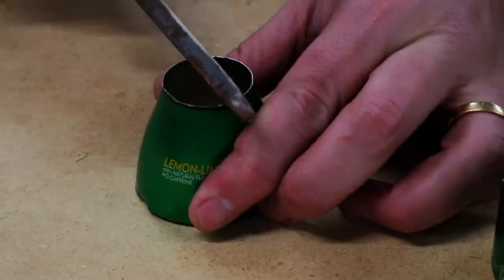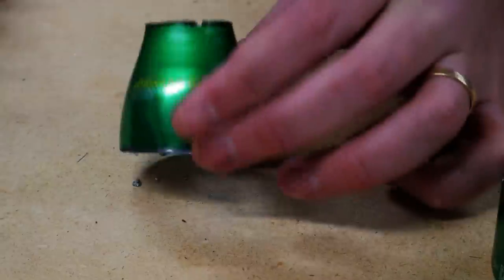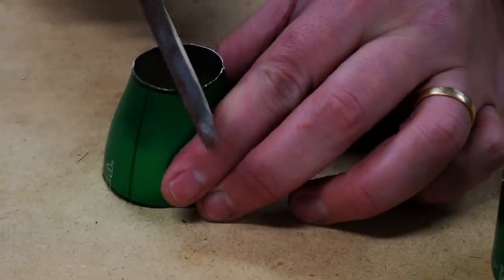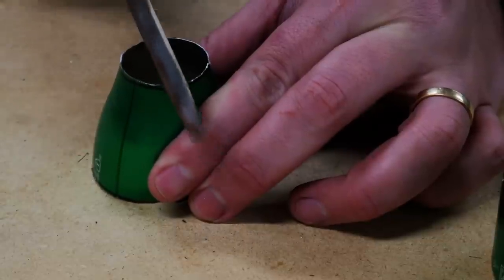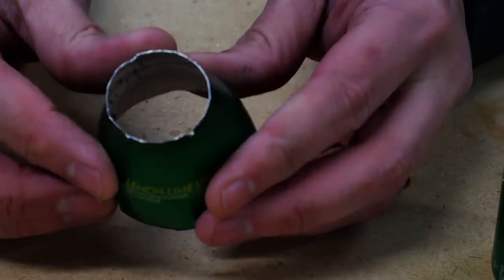Now here I've got a v-shaped file and you're just going to file in some notches here and that's going to allow the alcohol to come up on the outside of the aluminum and go up to the jets to create the jet action. There you go.